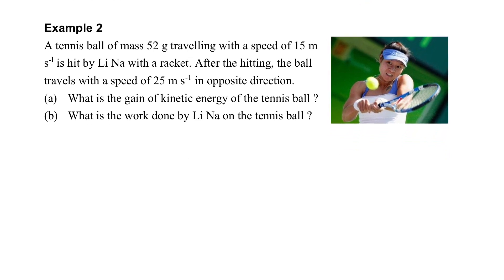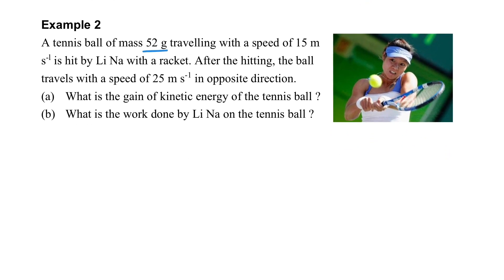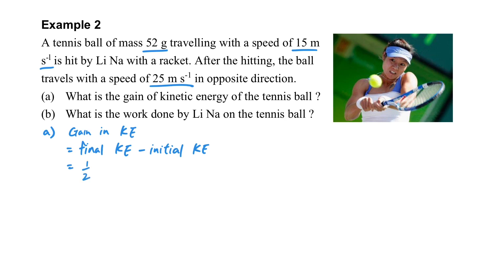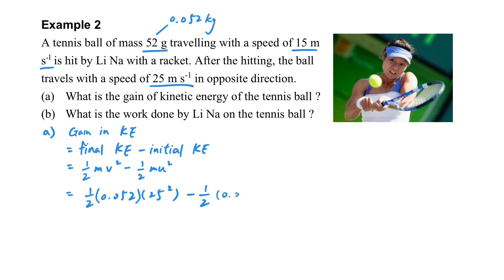Let's see two examples related to this kind of situation. If we have a tennis ball flying to the player and it travels back at another speed, what is the gain of kinetic energy of the tennis ball? It should be the final KE minus the initial KE. In this situation, we have to convert the mass of the tennis ball into kilograms before we do the substitution. After substituting all the numbers, we can find out the value of the gain in kinetic energy of the tennis ball.